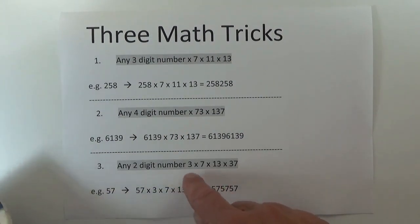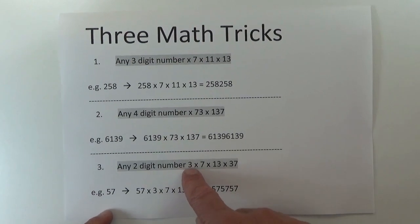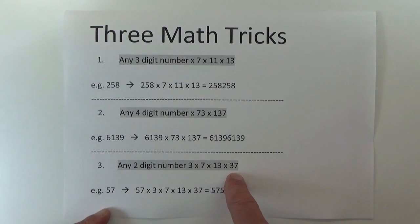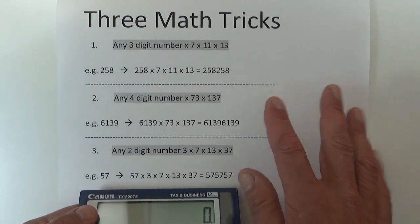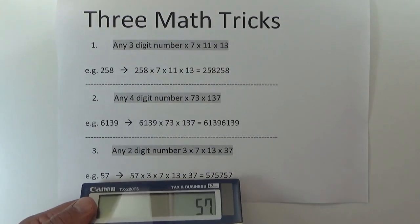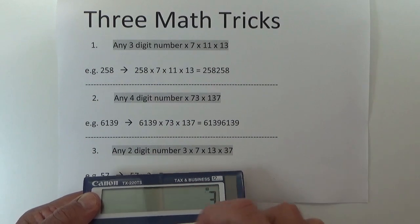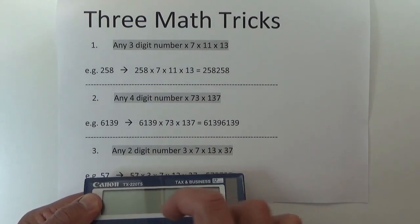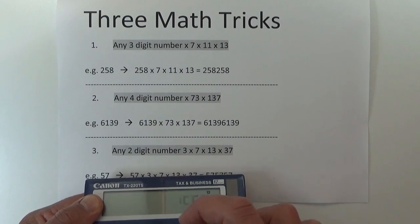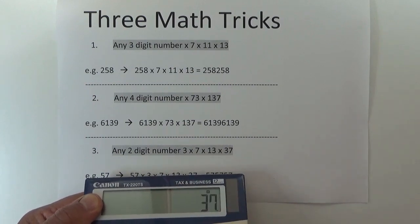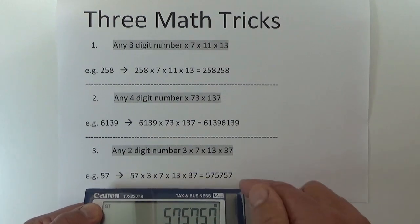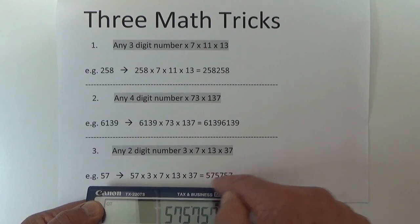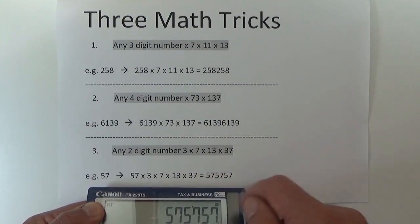And then the third one is where you take any two-digit number, multiply by 3, multiply by 7, multiply by 13, and then multiply by 37. So with 57 — multiply by 3, by 7, by 13, by 37 — and the answer is 575757, so the 57 now appears three times in the answer.